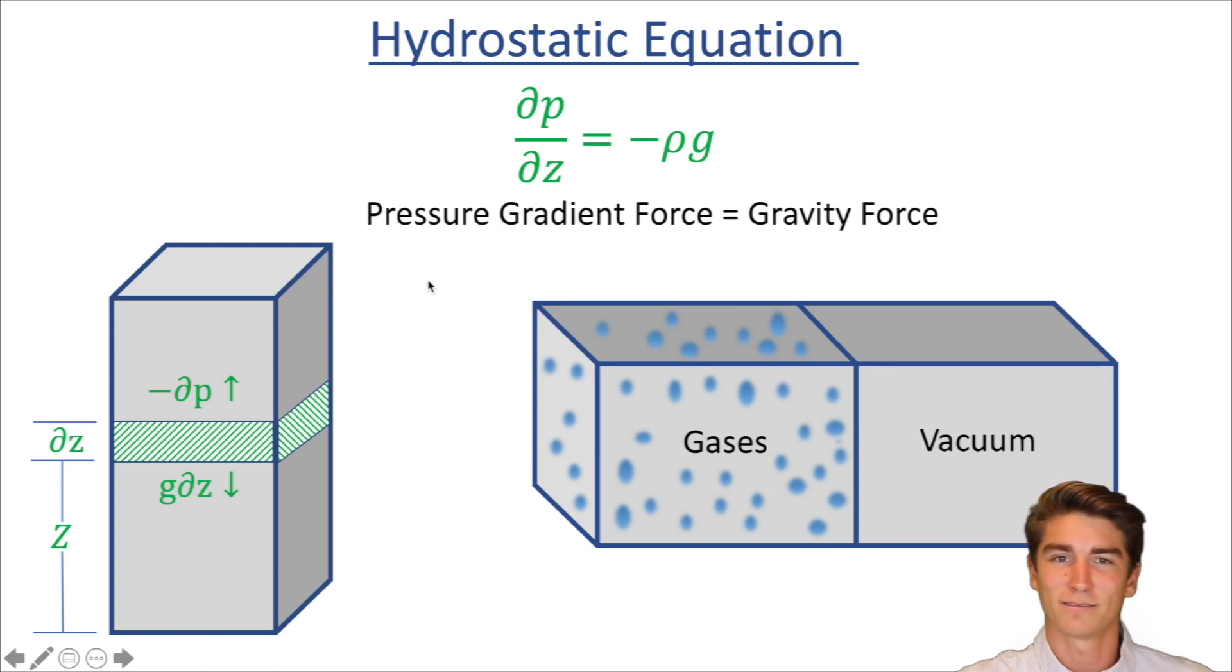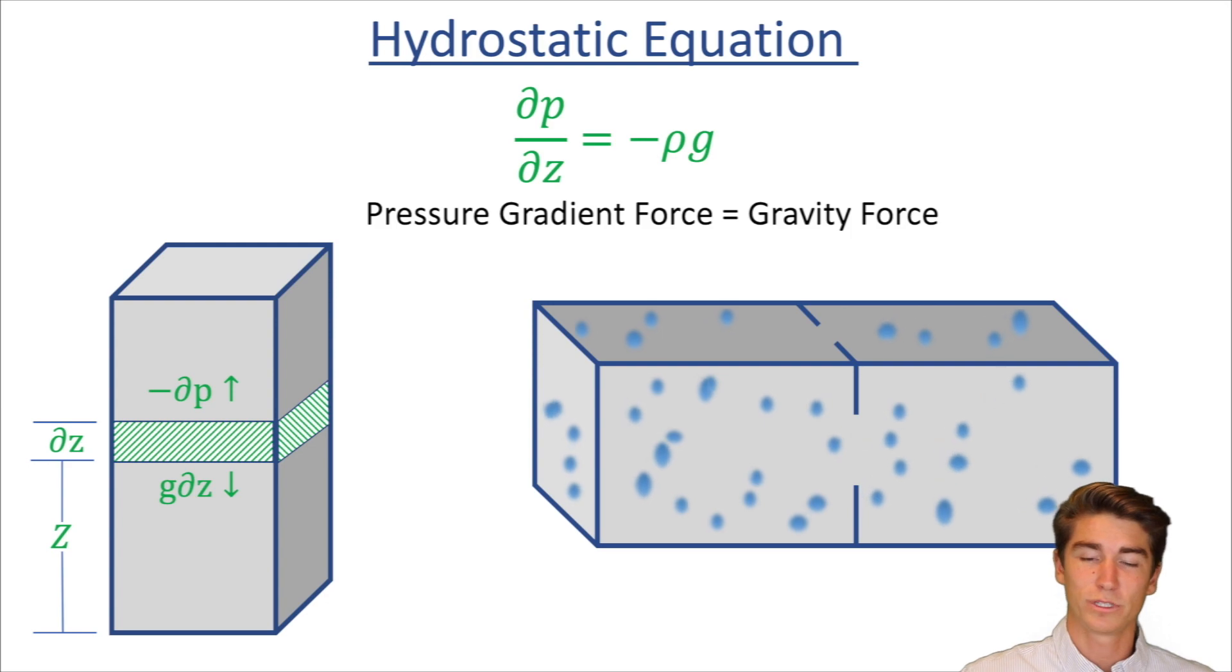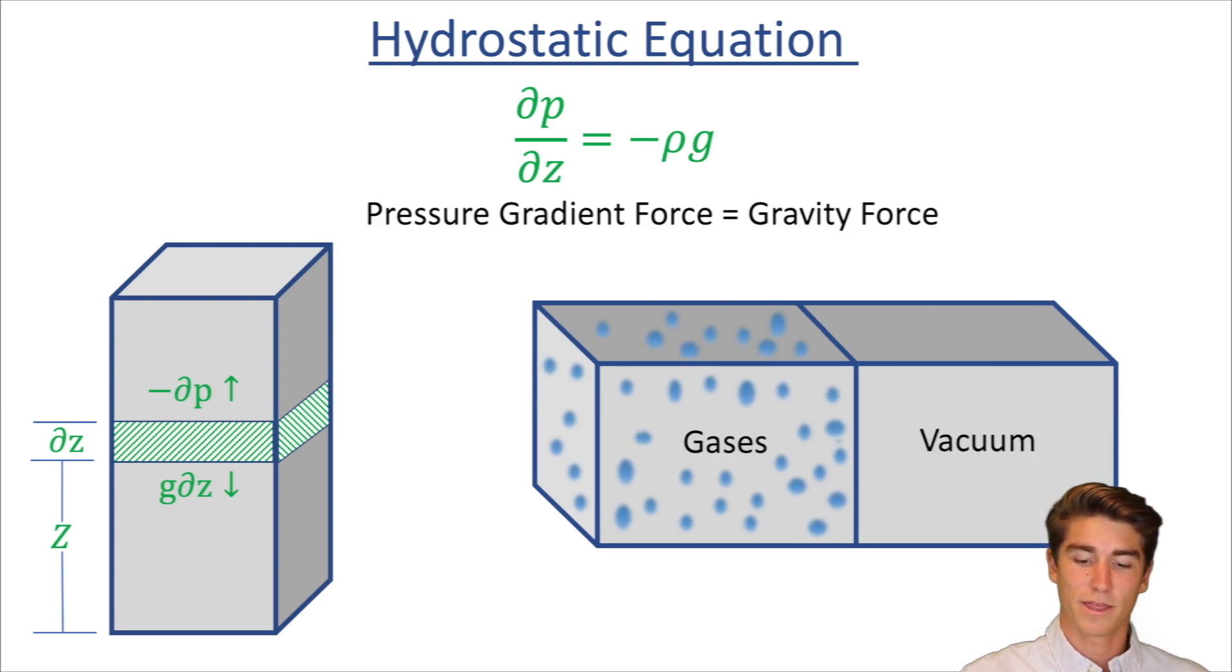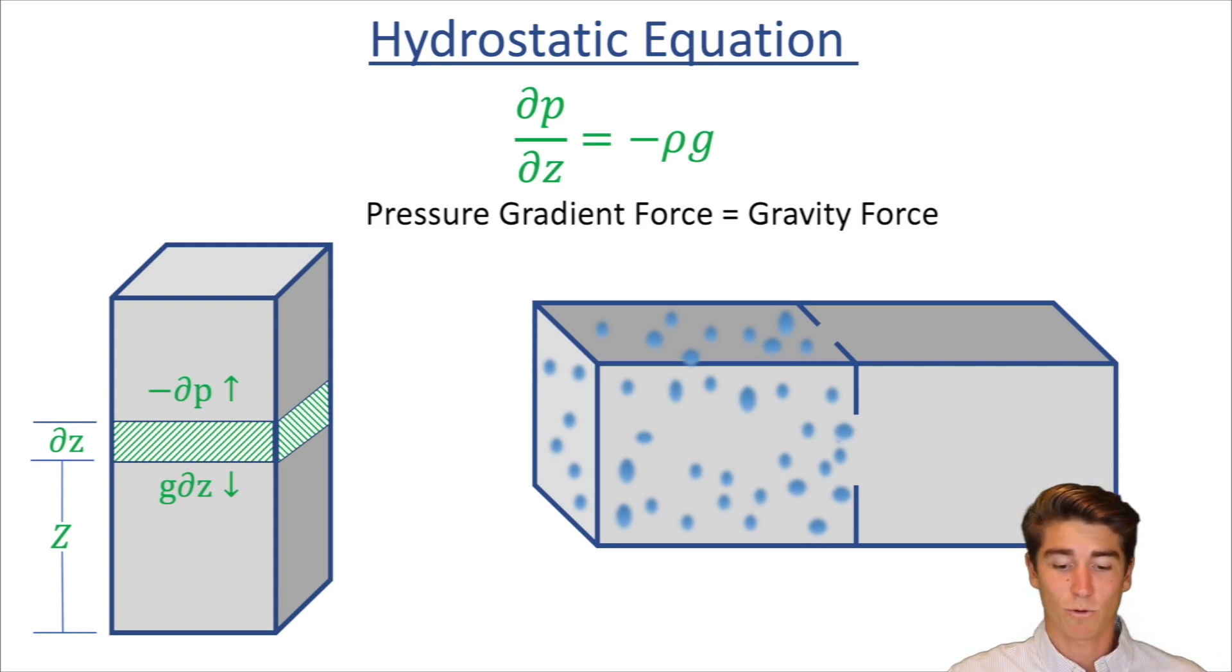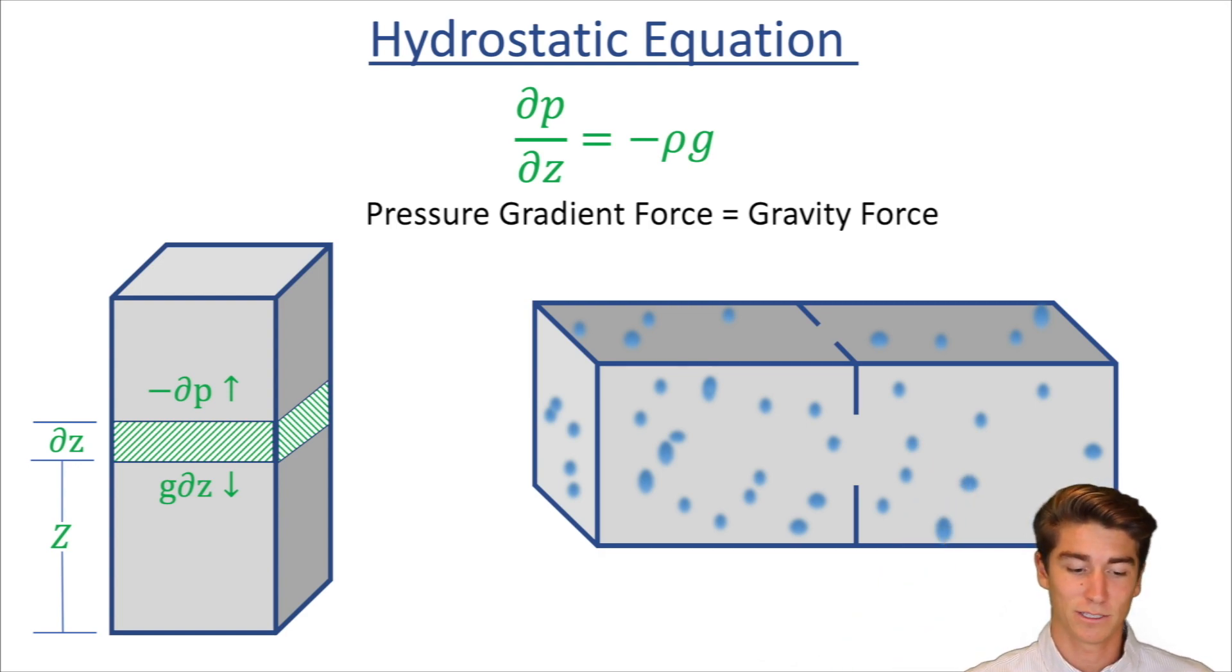So to kind of better picture this I built this figure here where we have in this box a bunch of gases. And in this box it's a vacuum. There's nothing in there. If you know anything about gases they like to diffuse. So what do you think is going to happen if we were to break that wall down? Those gases are going to diffuse into the other box. Now I want you to imagine this is like our atmosphere. Right here this is the surface and the vacuum represents space. So you would think there's no walls between us and space. So all those gases really want to just escape out into space and we would have no atmosphere down here.